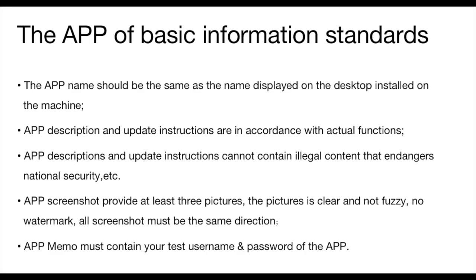App audit specification. First, the app basic information standards: the app name should be the same as the name deployed on the desktop installed on the machine. App descriptions and update instructions must be in accordance with actual functions and cannot contain illegal content that endangers national security. App screenshots must provide at least three pictures that are clear, not fussy, with no watermark, and in the same direction. App memo must contain your test username and password.